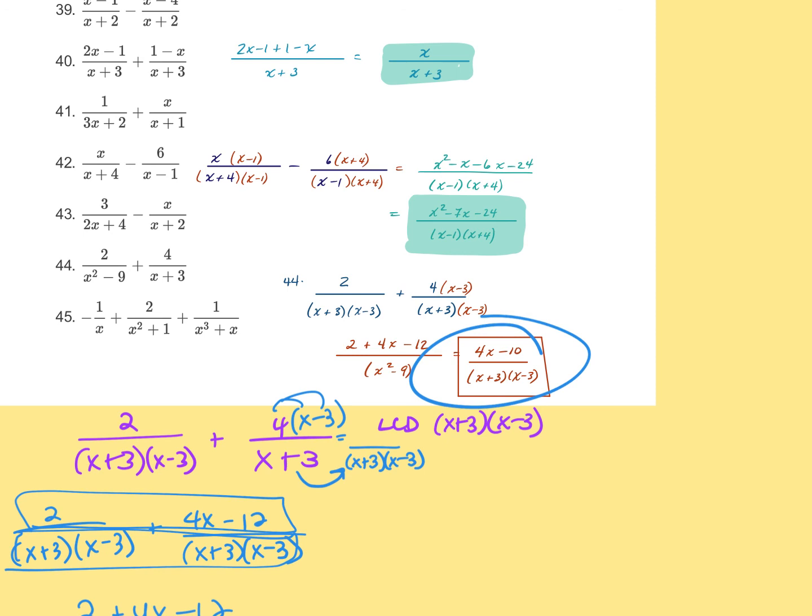The negative sign goes to both the 6x and the 4 — make sure to distribute it to all terms after it.